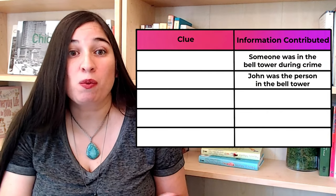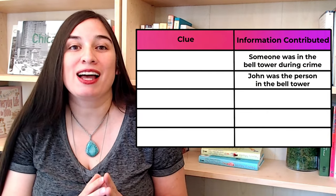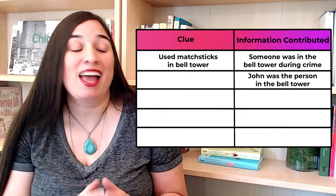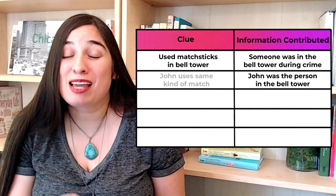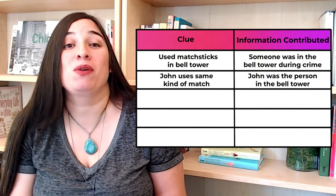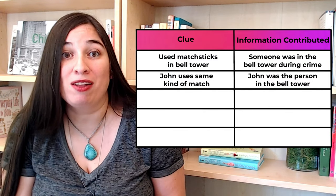To do this, we might leave a physical clue in the bell tower — say, a little stack of used matchsticks. And when we later see John lighting a cigarette with that same kind of match, we'll have enough info to put two and two together and deduce that John was in the bell tower. What have we accomplished by splitting our clue in two? For starters, we've doubled the number of scenes in which our sleuth is going to be finding clues and making progress towards solving the case.